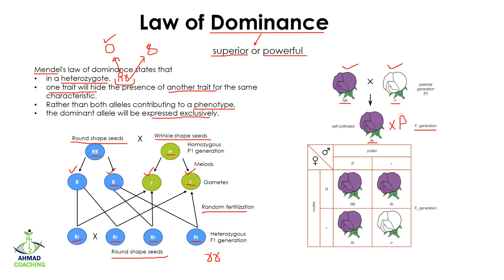But if we cross two heterozygotes together, using a Punnett square with male and female gametes: capital R fuses with capital R giving the original dominant genotype; capital R can fuse with small r giving a heterozygote; this gamete can fuse with the other small r also giving a heterozygote; and small r can fuse with small r giving the original small r small r phenotype.